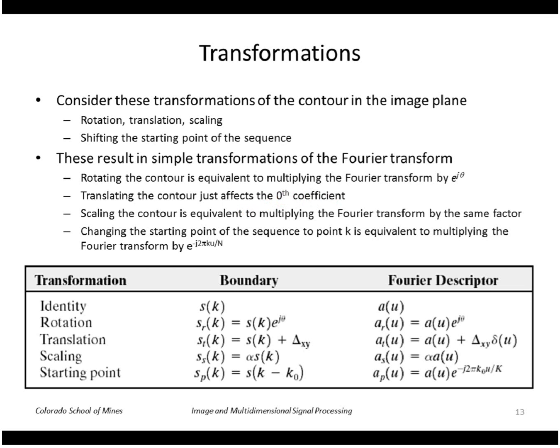because remember that's just the centroid. Scaling the contour is equivalent to multiplying the Fourier descriptors by that scaling factor. And changing the starting point of the sequence to point k is equivalent to multiplying the transform by this number here.